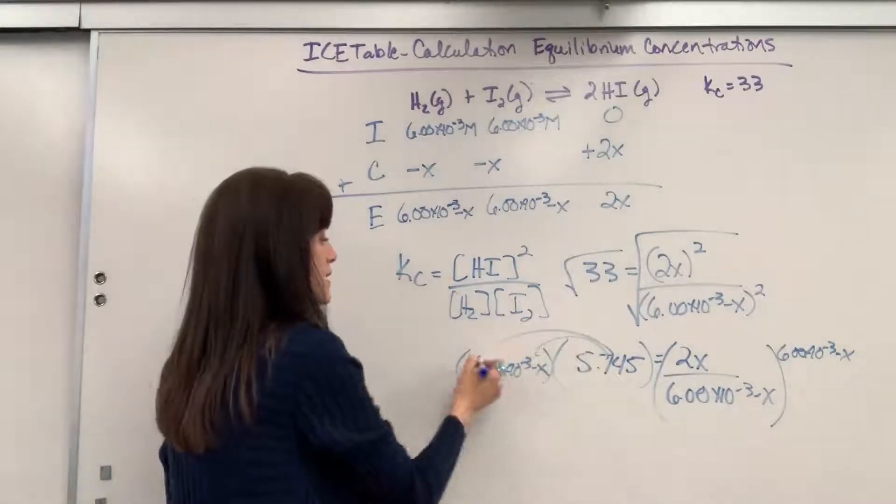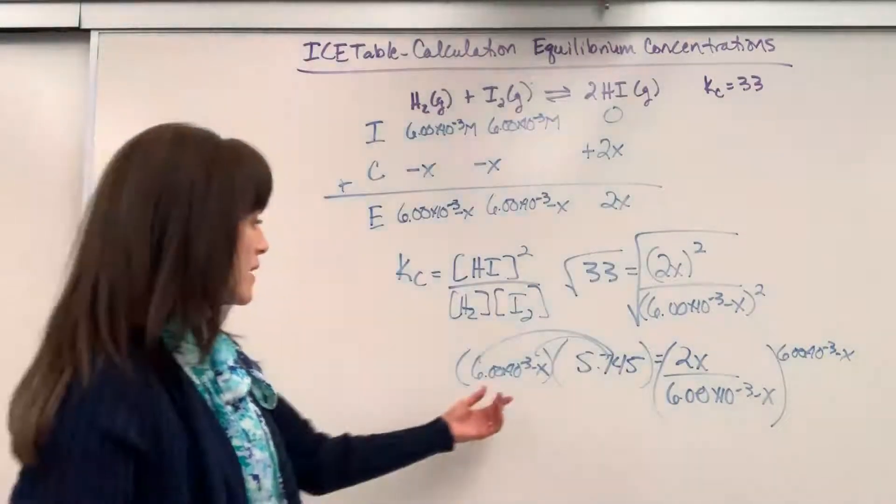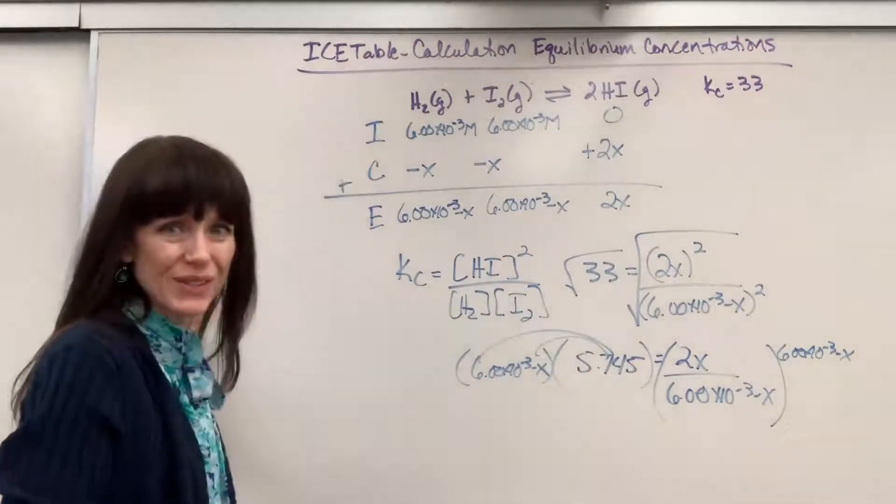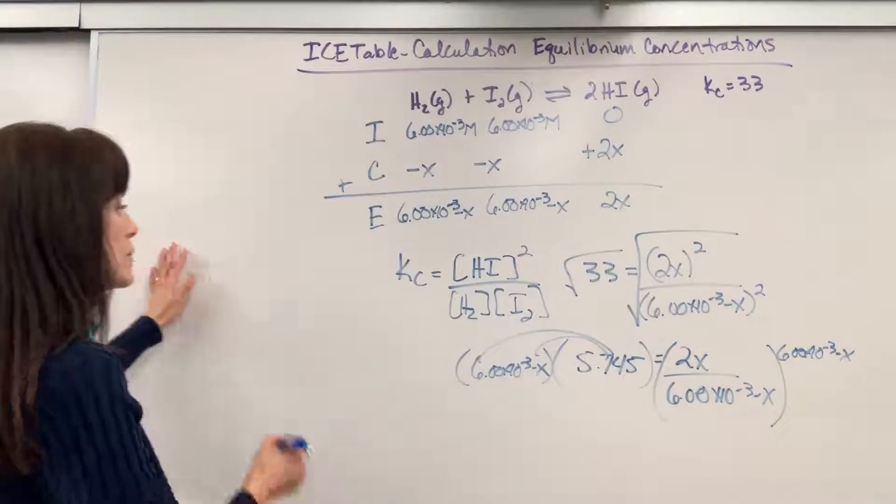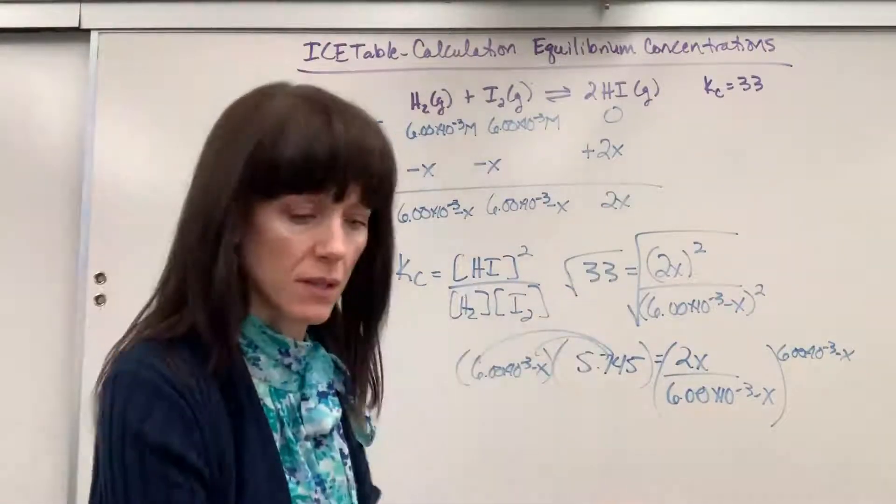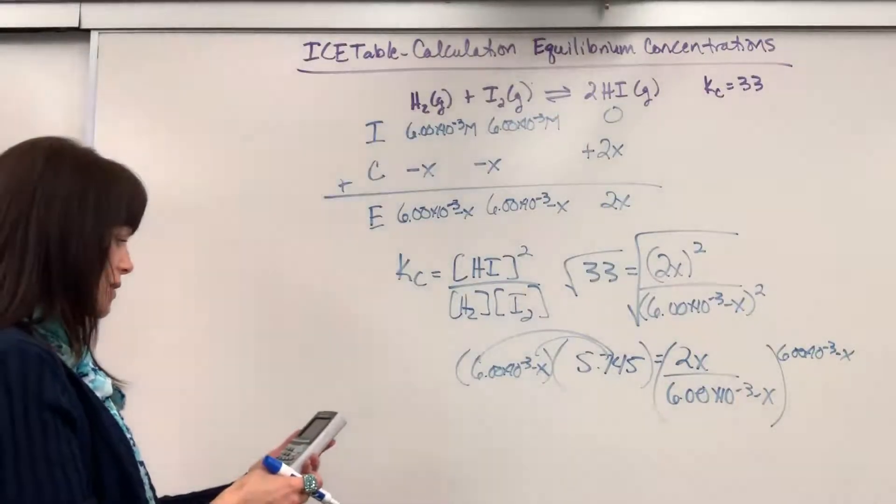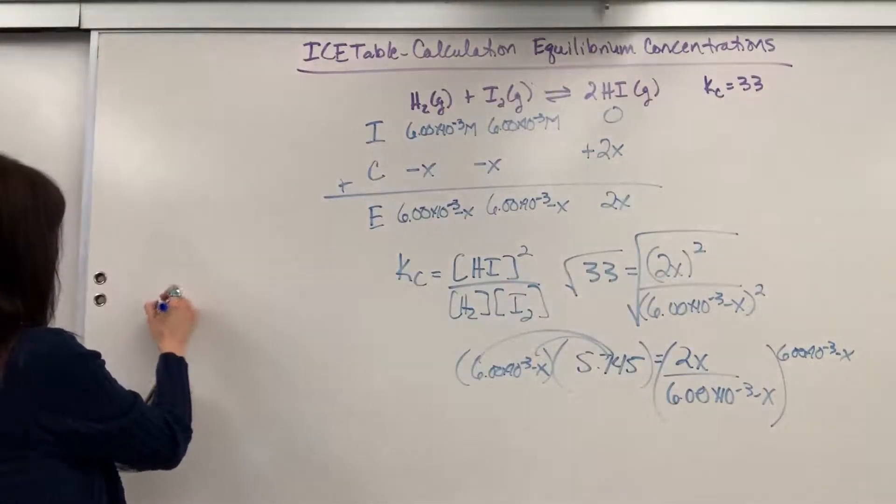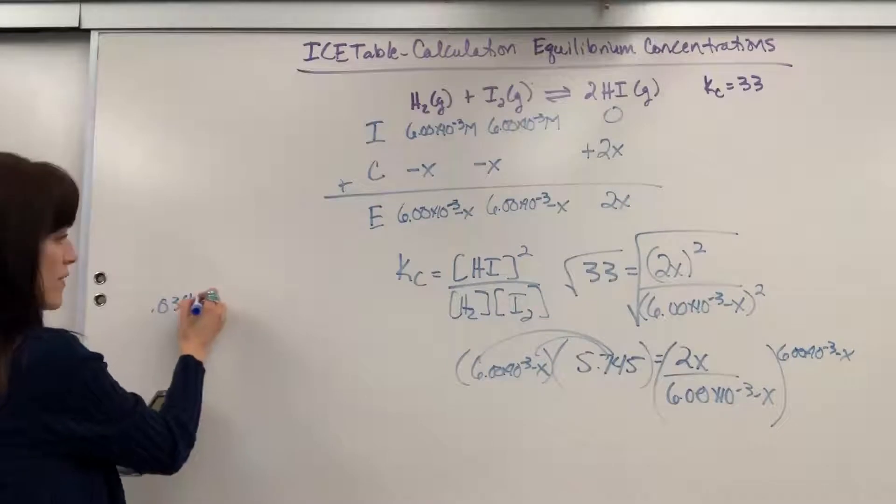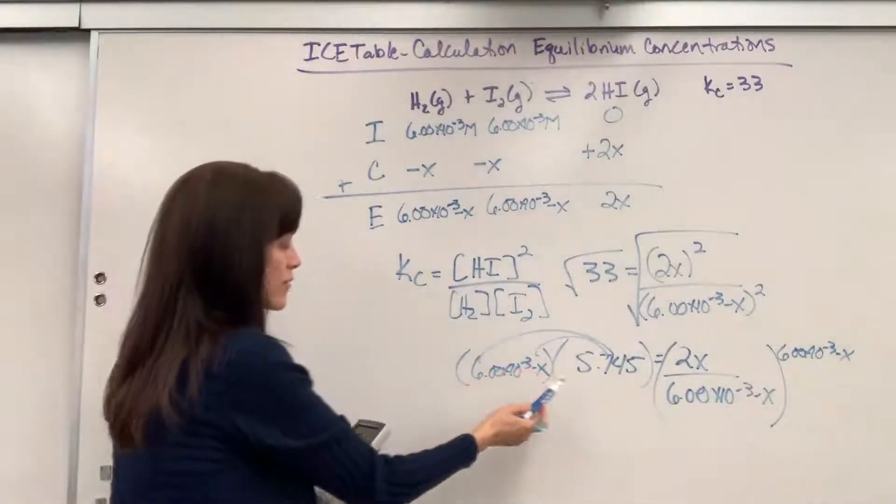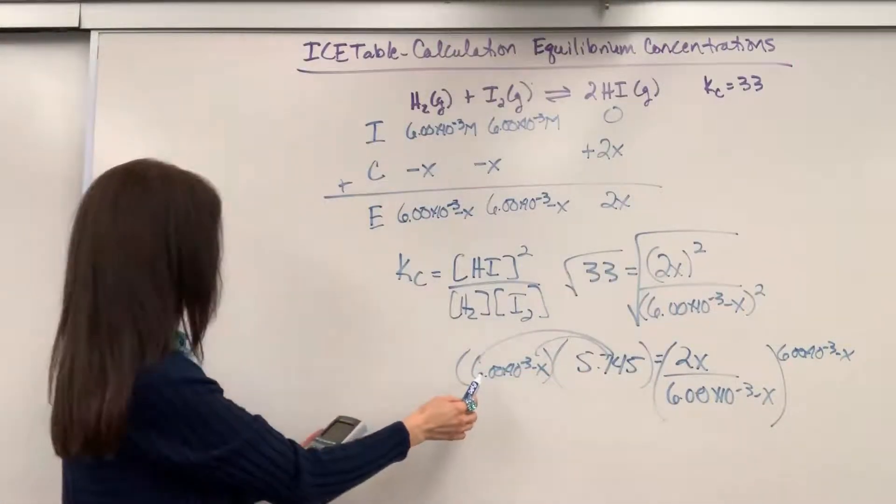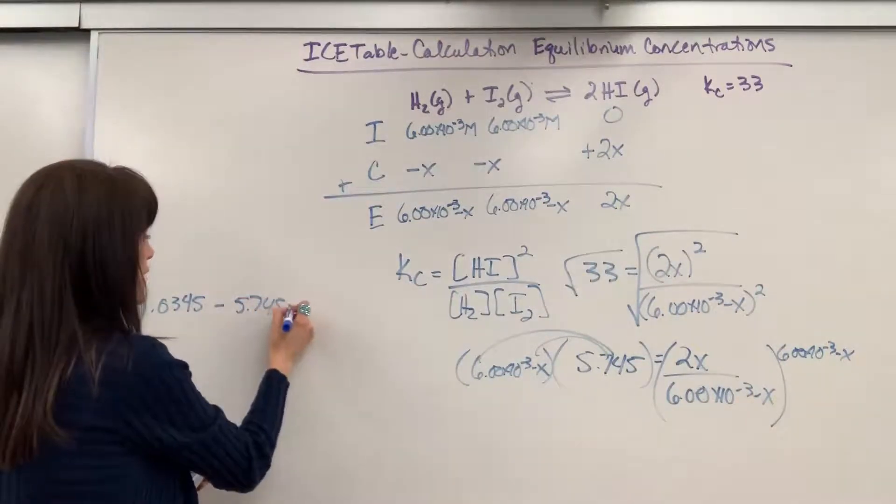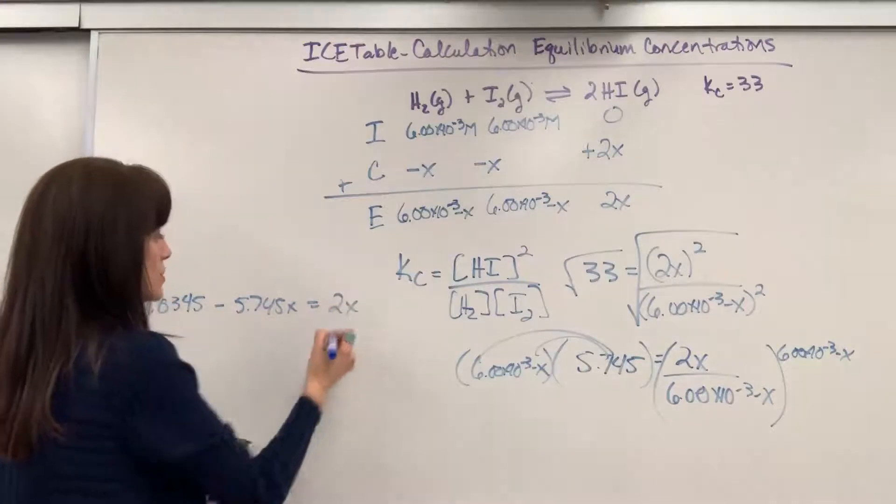6 times 10 to the minus 3 minus X. Okay, so we're going to have to distribute this to both of these species inside that binomial. I'll pull it over here so you can see it just a little bit better. So 6 times that 5 is going to be 0.0345. So that's 5.745 times 6 times 10 to the minus 3 minus, that will be 5.745X equals 2X.